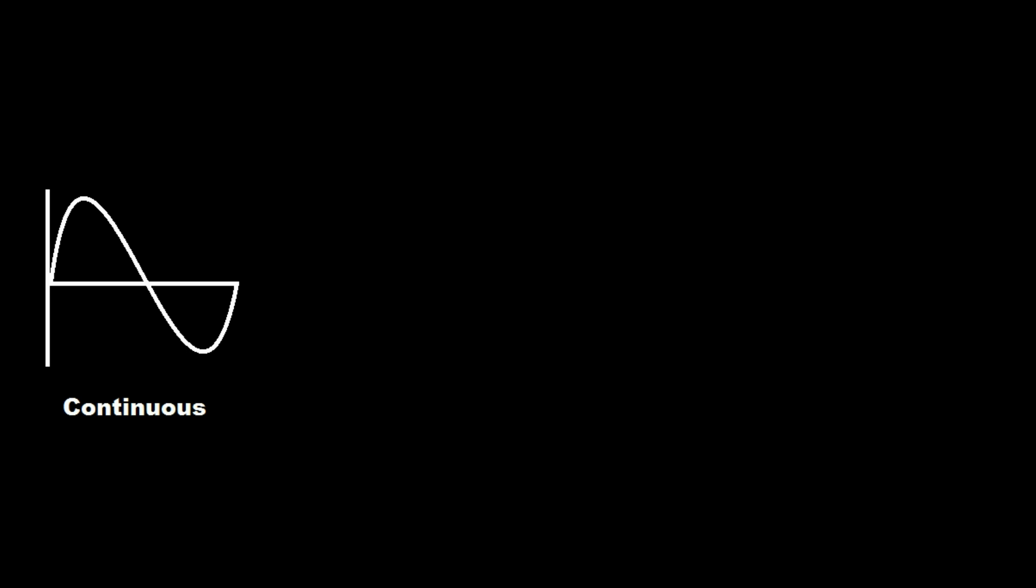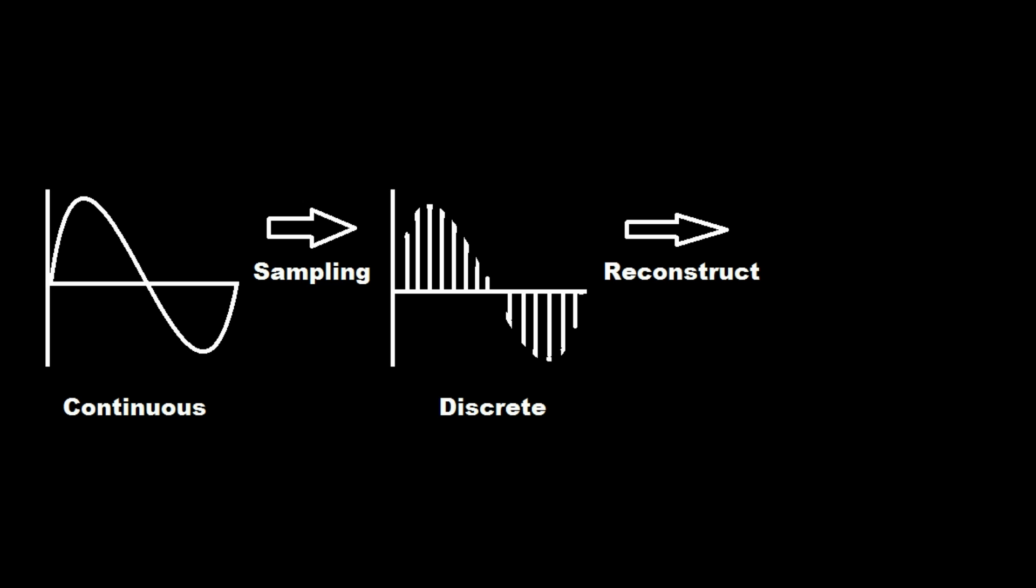The analog signal after sampling becomes a discrete signal where each position is a number and it has finite data. After reconstructing it becomes an analog signal.